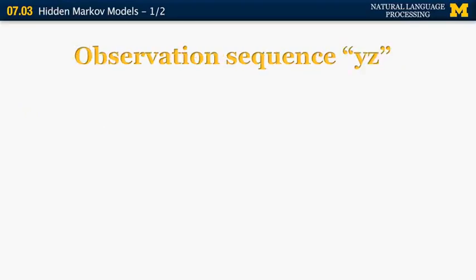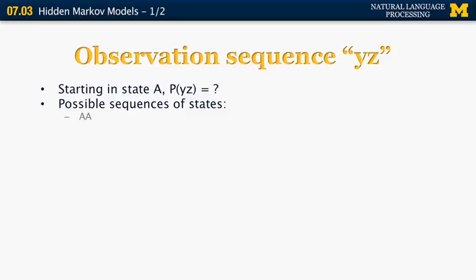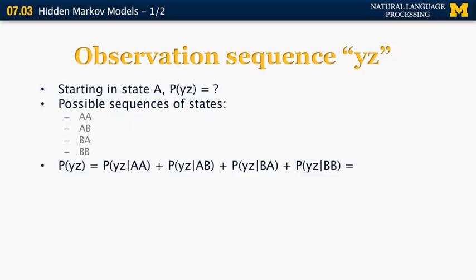Let's compute the probability of observing the sequence YZ from this automaton. Starting in state A, we consider all possible sequences of states: AA, AB, BA, and BB. The probability of YZ given the sequence AA, plus the probability given AB, plus the probability given BA, plus the probability given BB — the sum of those four terms gives the full probability of the observation sequence YZ.